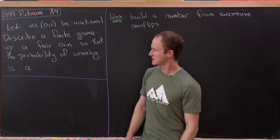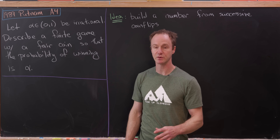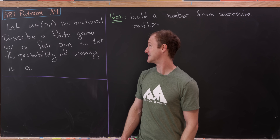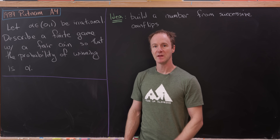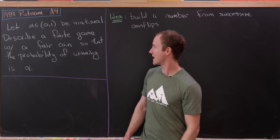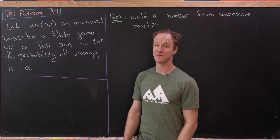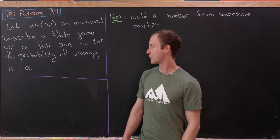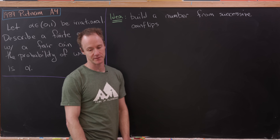Let's suppose we've got a number alpha. That number is between 0 and 1 exclusively, and it's irrational. Our goal is to describe a finite game that you play with a fair coin so that the probability of winning is exactly alpha.